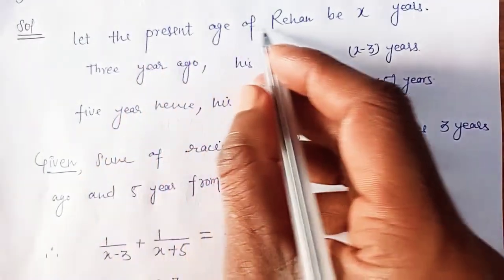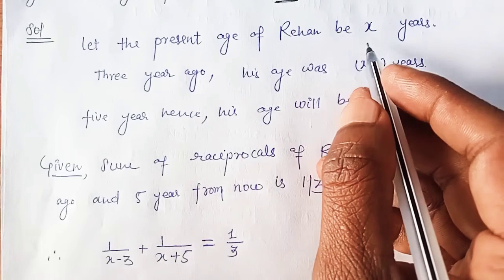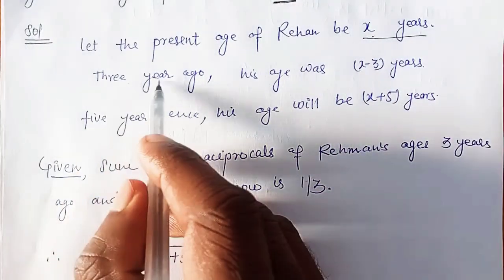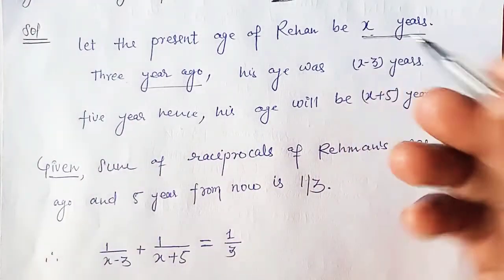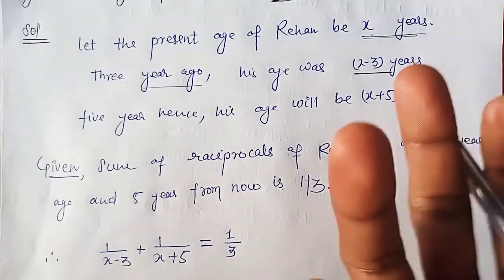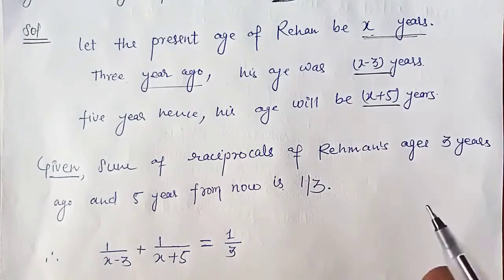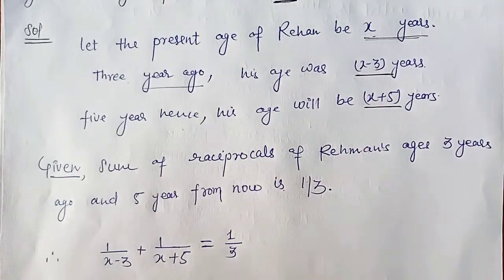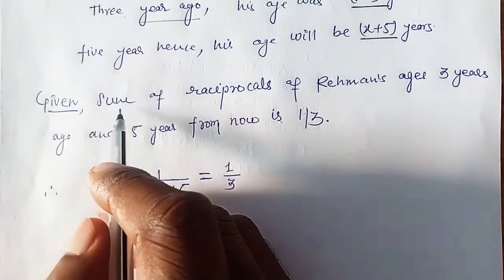Let the present age of Rehman be x years. Three years ago his age would be x minus 3, and five years later it would be x plus 5.